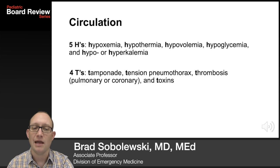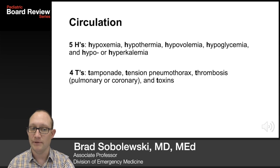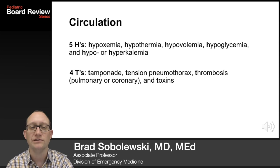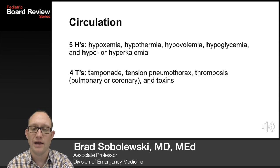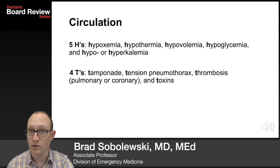The five H's are: hypoxemia, hypothermia, hypovolemia, hypoglycemia, and hypo- or hyperkalemia. The four T's include tamponade, tension pneumothorax, thrombosis (either pulmonary or coronary), and toxins.